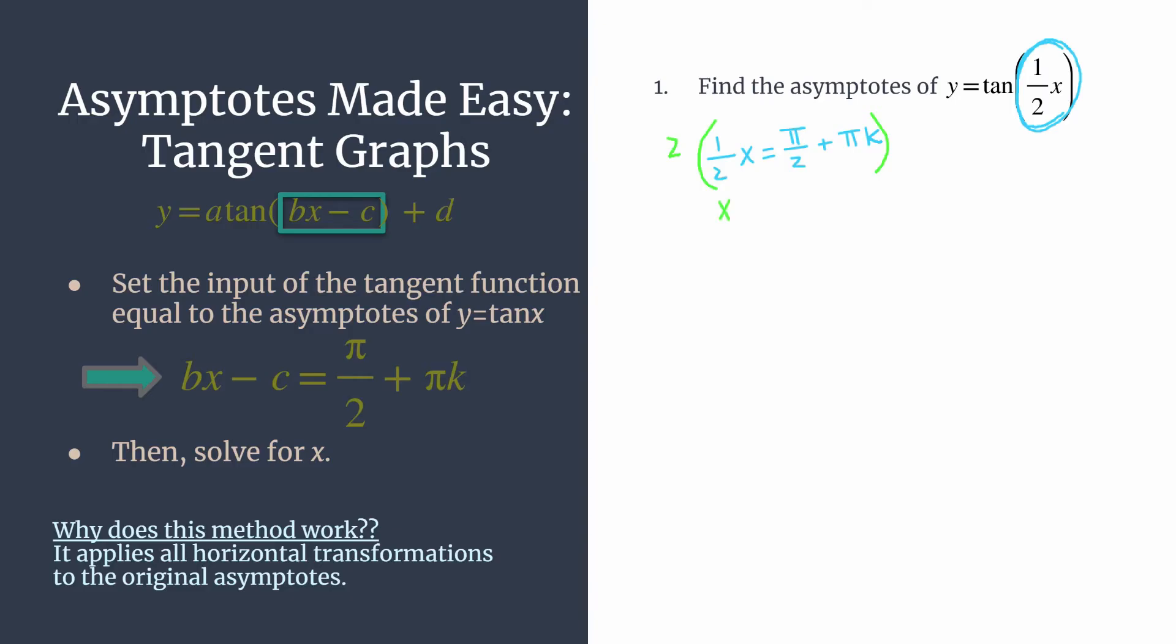We'll have x on the left side, pi over two times two is just pi. And then two times pi k is just two pi k. So this is the asymptotes equation. This will give you all of the asymptotes for tangent of one half x.